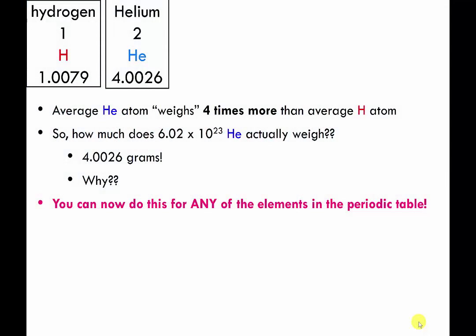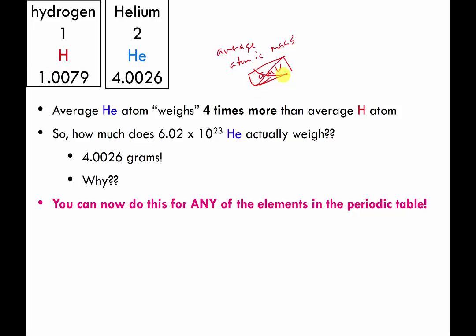To recap what was covered in the previous video: these numbers were introduced as a measure of average atomic mass, with units of amu. What I'm telling you now is that chemists reuse these numbers — they swap out this unit and say we can use grams instead. One gram is about the weight of one paperclip. So 1.0079 grams of hydrogen atoms is a specific number of hydrogen atoms, and 4.0026 grams of helium is that many helium atoms — there's a way of converting between grams and how many atoms you have.